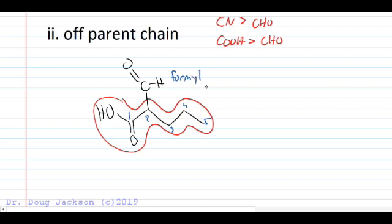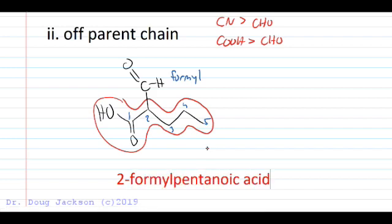It's not included in the number of the parent chain, so it needs a full group name there, and it's a formyl group. No stereochemistry indicated at that chiral center, so we don't have to worry about it. It's a 2-formylpentanoic acid, two words there for pentanoic acid, named as a carboxylic acid because that's the highest priority group.